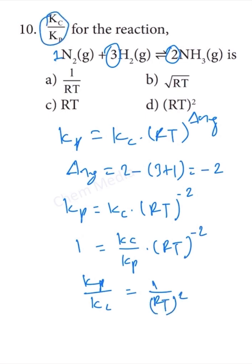But here they are asking for Kc divided by Kp. Therefore, if we flip it, Kc divided by Kp equals RT squared. This means option D is correct.